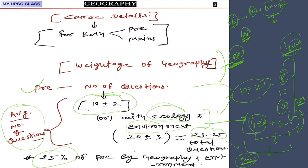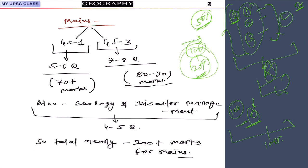This subject is very conceptual in nature, and ecology and environment is a very easy subject. The only challenge is you need to understand it in relation to current affairs. If you can interrelate these subjects, out of 25 questions you can solve 17 to 18, meaning 75 percent. But in geography, 90 to 95 percent is static — you don't need to update it with current topics. That is the beauty of geography.